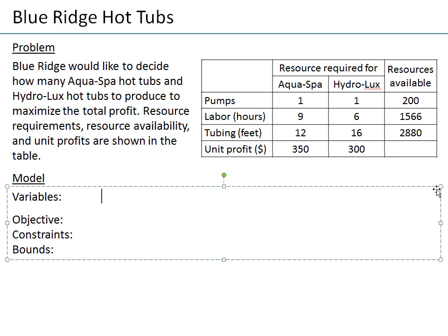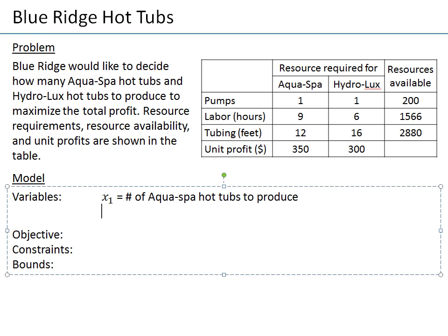Let's define them one by one. First, decision variables — what do we want to decide? We want to decide the number of units of product one, Aquaspa, and the number of units of product two, Hydrolux. So we define x1 as the number of Aquaspa hot tubs to produce, and x2 as the number of Hydrolux hot tubs to produce. One could use any symbols, but we'll use x for simplicity.